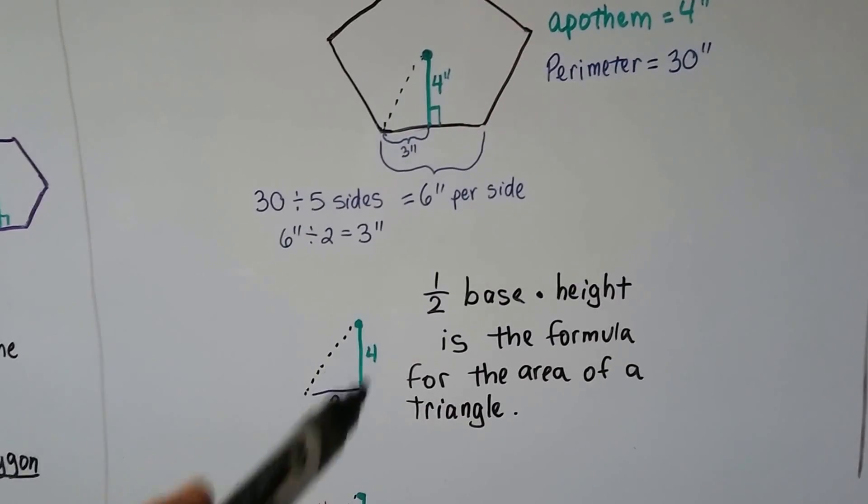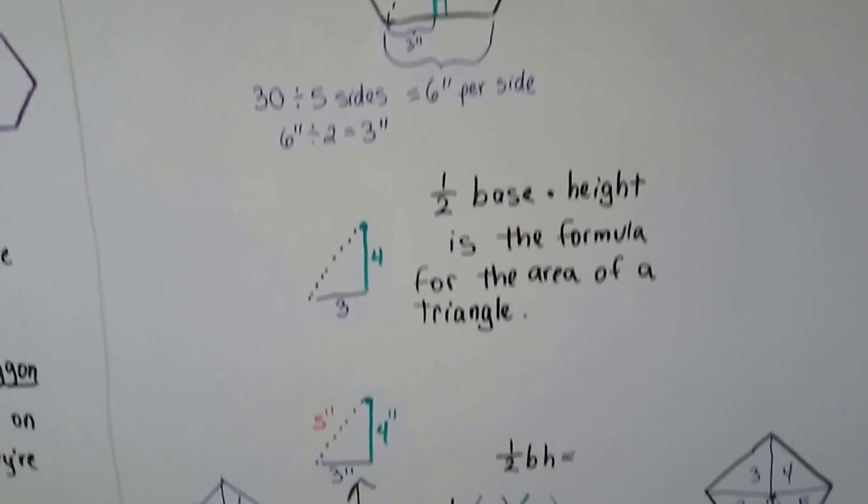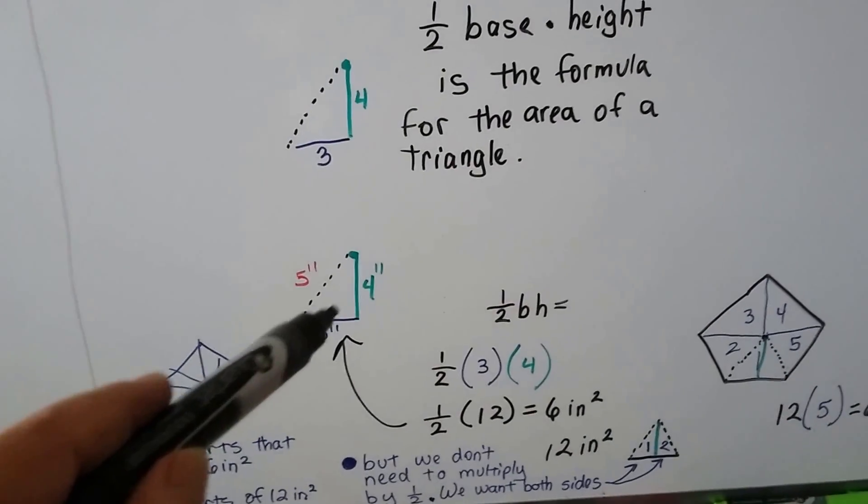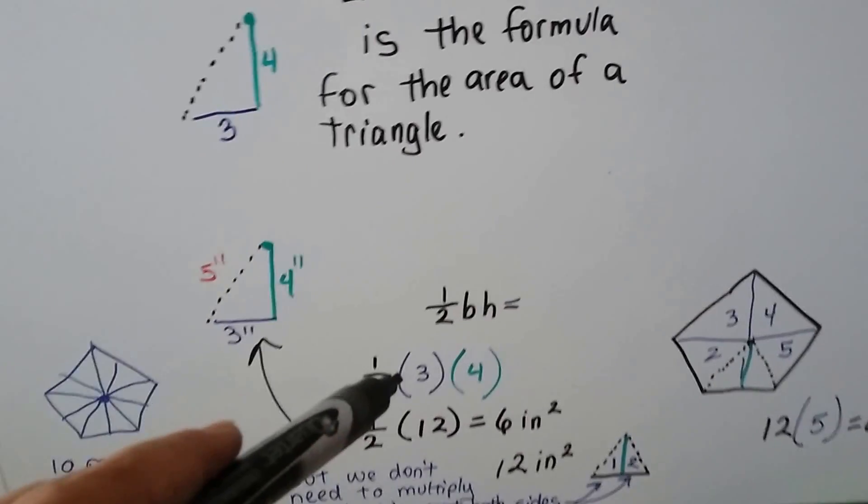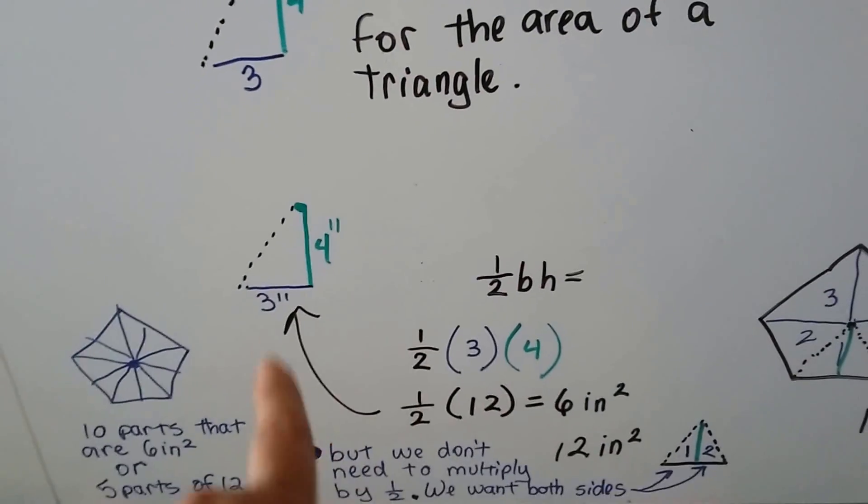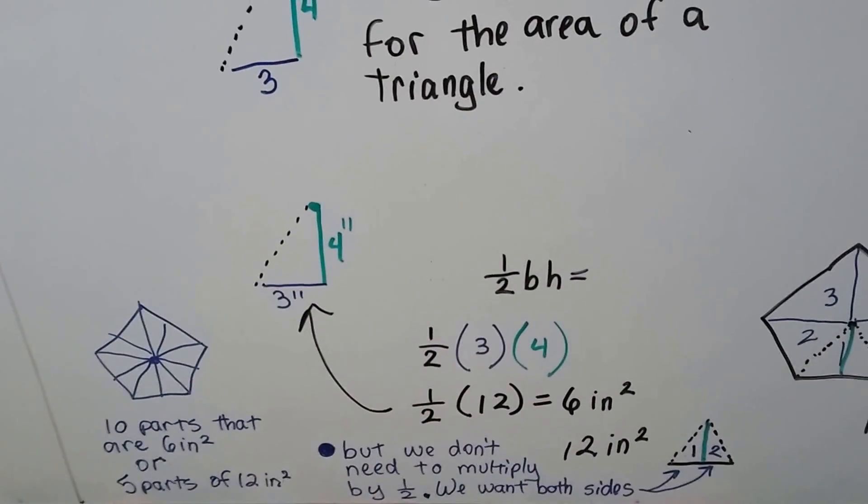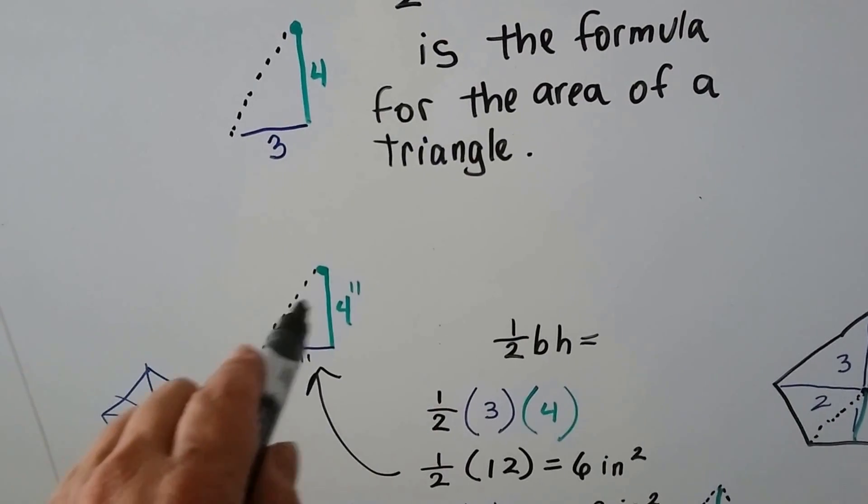So if we know that's a four for the apothem and a three for half of this side, we could do four times three, which is 12. We don't need this, do we? We can do four times three, which is 12 and multiply it by a half and get a six inch square. So there's six inches square inside of here.